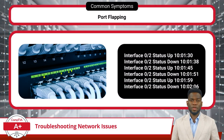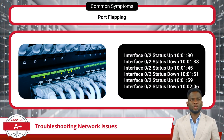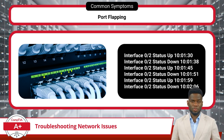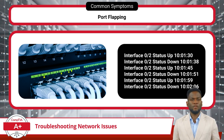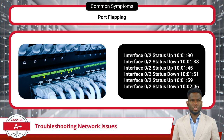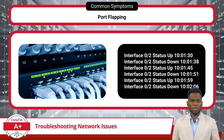Next, we have port flapping. Port flapping refers to a network issue where a port on a network device, such as a switch or router, rapidly alternates between the up and down states. This continuous fluctuation — essentially the interface turning on and off — disrupts network connectivity. Port flapping typically occurs due to problems with the physical connection, such as a faulty cable or connector, or issues with the network interface card.